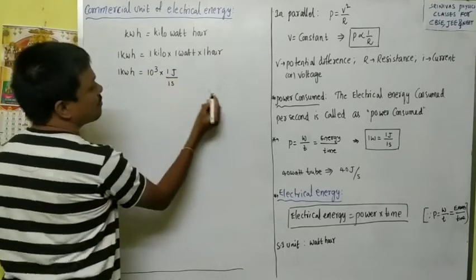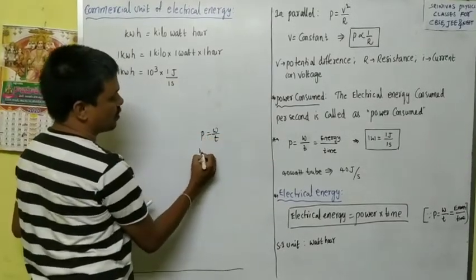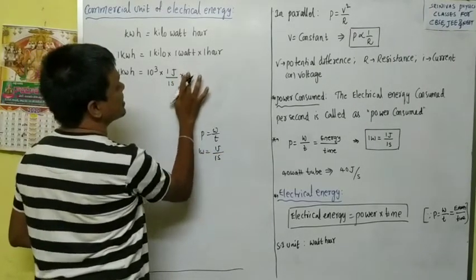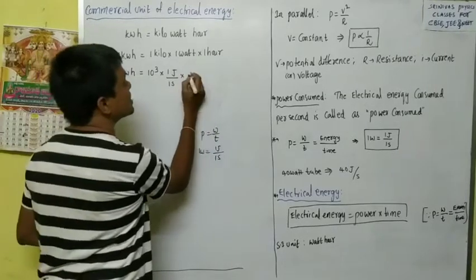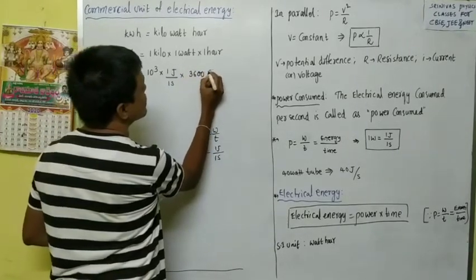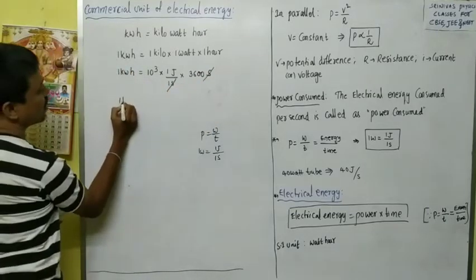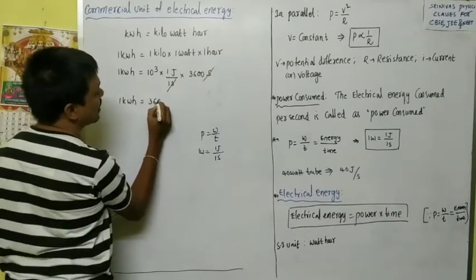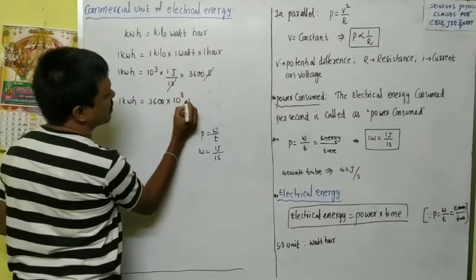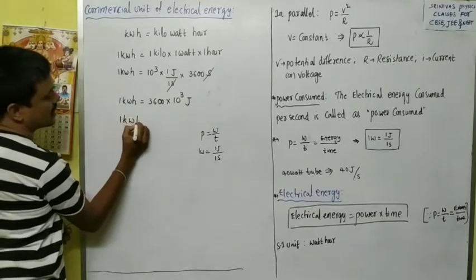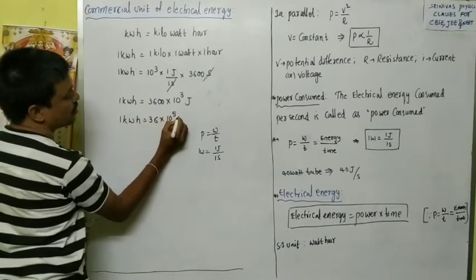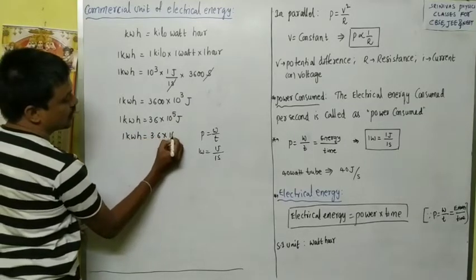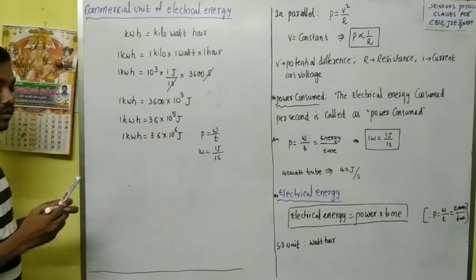One kilowatt hour equals 1000 × (1 joule/1 second) × 1 hour. One hour equals 60 × 60 = 3600 seconds. The seconds cancel, and we get one kilowatt hour equals 3600 × 10³ joules, which equals 36 × 10⁵ joules, or 3.6 × 10⁶ joules. You have to remember: one kilowatt hour equals 3.6 × 10⁶ joules.